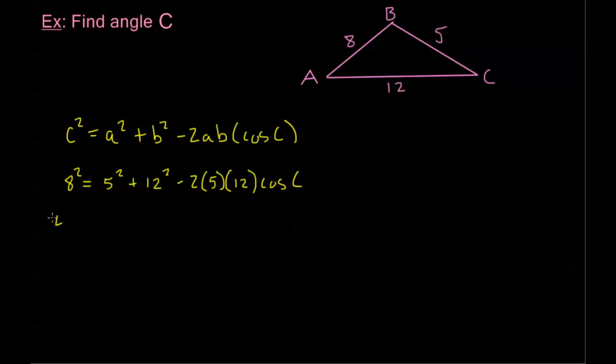Let's go ahead and multiply all these out. We get 64 equals 25 plus 144 minus 2 times 5 is 10, times 12 is 120 cosine C. Now putting all of these constants onto one side, we'll get 64 minus 25 minus 144 which gives me negative 105 equal to negative 120 cosine of C. Dividing both sides by 120, I get that cosine C equals 105 over 120 which reduces down to 7 over 8.